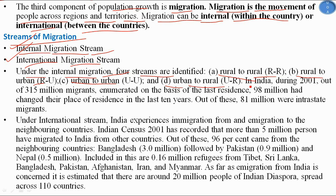In India during 2001, out of 315 million migrants enumerated on the basis of last residence, 98 million had changed their place of residence in the last 10 years, of which 81 million were intrastate migrants. Note: this is older 2001 census data; a link for present data from The Hindu newspaper is provided in the description below.